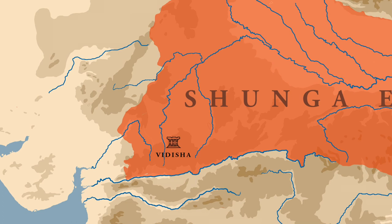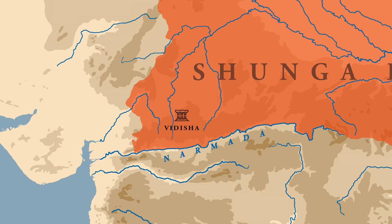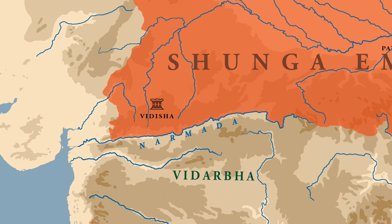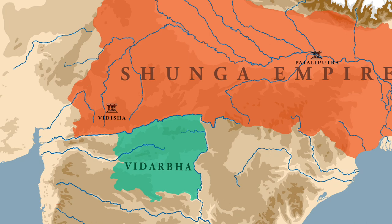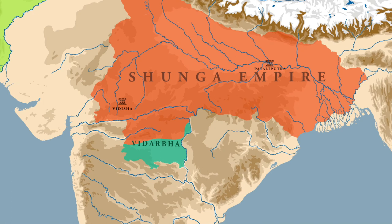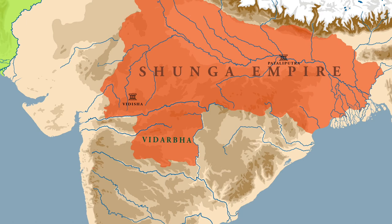In the initial years of Pushyamitra's reign, his empire stretched up to the Narmada river. South of the Narmada, in the region of Vidarb, when Pushyamitra Shunga declared himself king, this region had broken away from the Mauryan empire and established its independence. This act of defiance was taken very seriously by Pushyamitra Shunga, and he ordered his crown prince to attack Vidarb. Agnimitra successfully conquered the region and incorporated it into the Shunga empire.